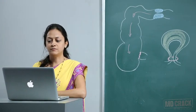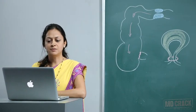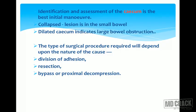Identification and assessment of the cecum is the best initial maneuver. If it is collapsed, the lesion is in the small bowel. If it is dilated, it indicates large bowel obstruction.